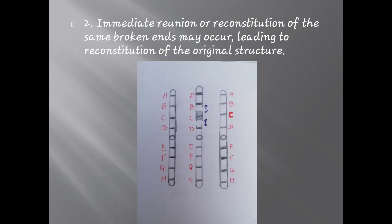Second, immediate reunion or reconstitution of the same broken ends may occur, leading to reconstitution of the original structure. Here you can see the same chromosome with breaks occurring at the same positions — between B and C, and C and D — but here immediate reunion takes place, leading to reconstitution of the original structure of the chromosome.